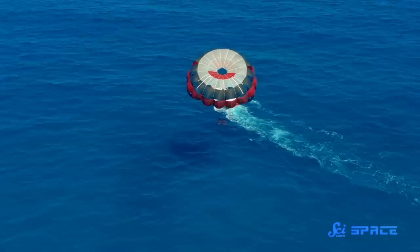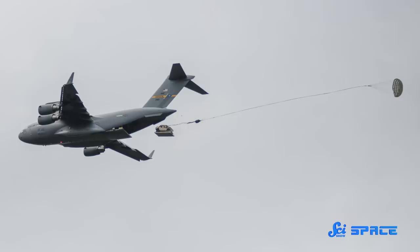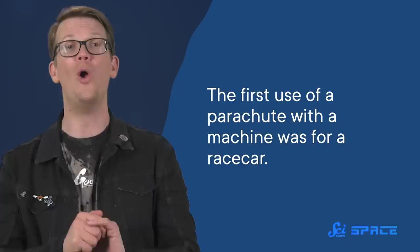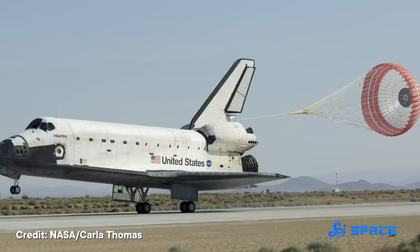That design from the early 1800s is basically what we still use, a frameless balloon shape with some venting for stability. But how we use parachutes has changed a lot. They are not just for landing humans anymore. We are also using them for landing huge machines. In fact, the first use of a parachute with a machine was for a race car. And from there, it was a hop, skip, and a jump to spacecraft.